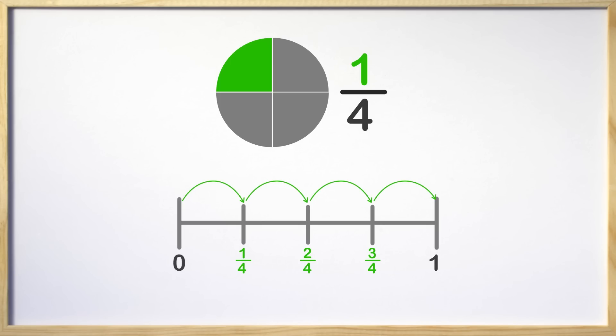Something very important we need to remember is when we are counting the fractions on a number line, we are not counting the lines. We are counting the parts in between. The jumps we did with the curved lines shows the parts of the fraction. We now know where one fourth is on the number line. It is this part right here.